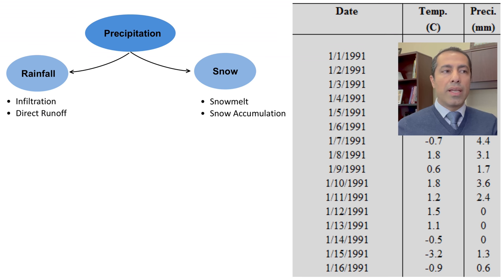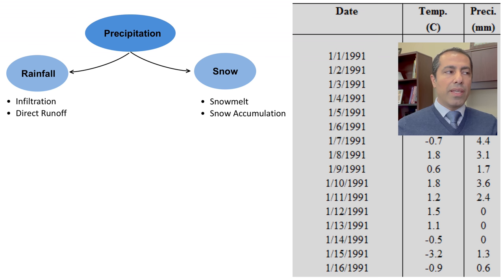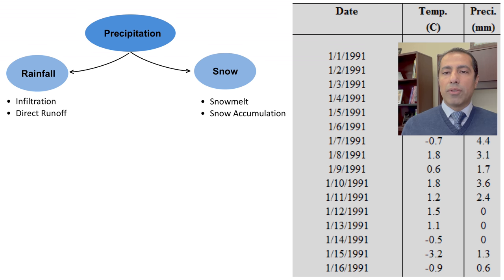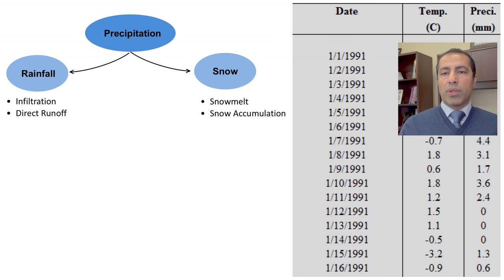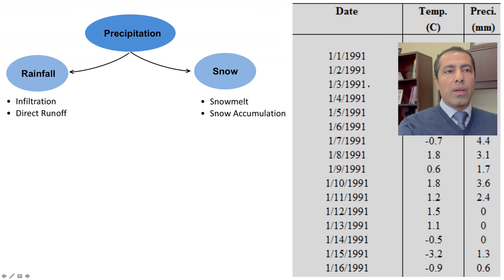The first step in our model flowchart is decomposing precipitation to rainfall and snow. We want to assume that if precipitation falls in form of snow, we won't have infiltration or direct runoff — it comes down as snow and remains there until it melts. That's a strong assumption. If precipitation falls in liquid form, we have to calculate infiltration and direct runoff; some rainfall will infiltrate and some will immediately turn into runoff.